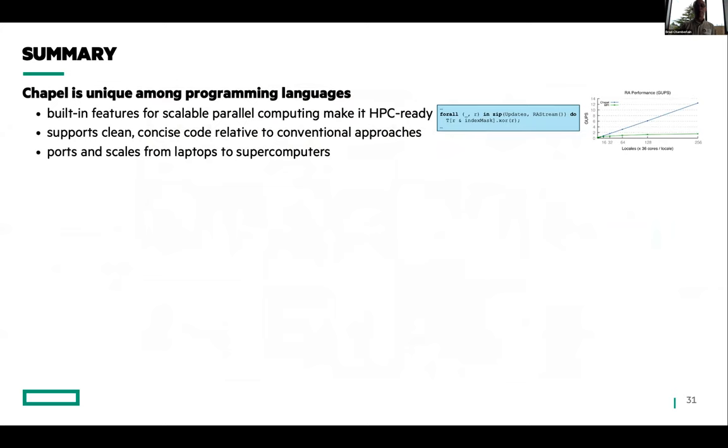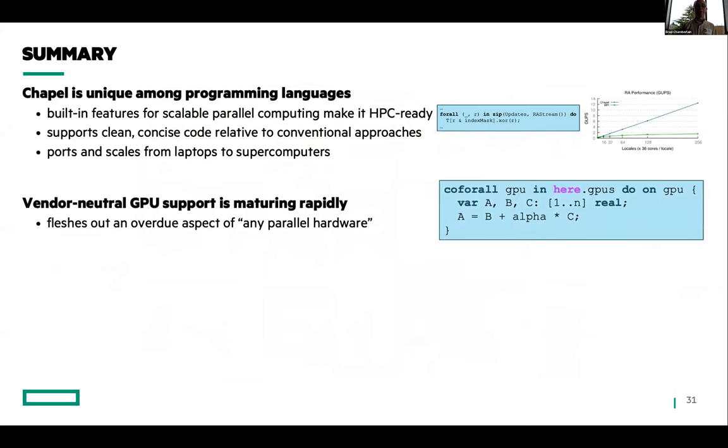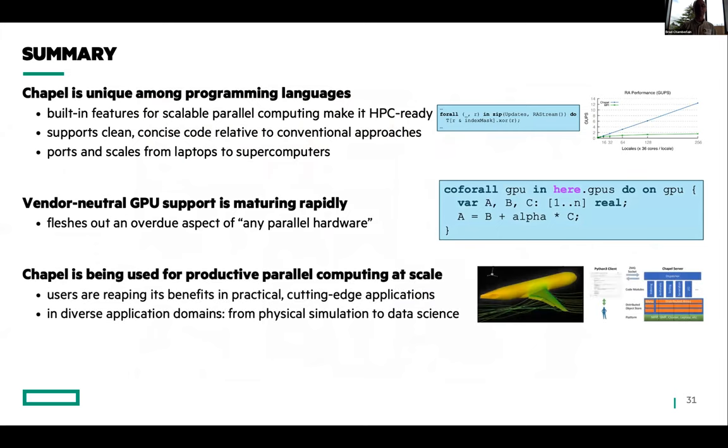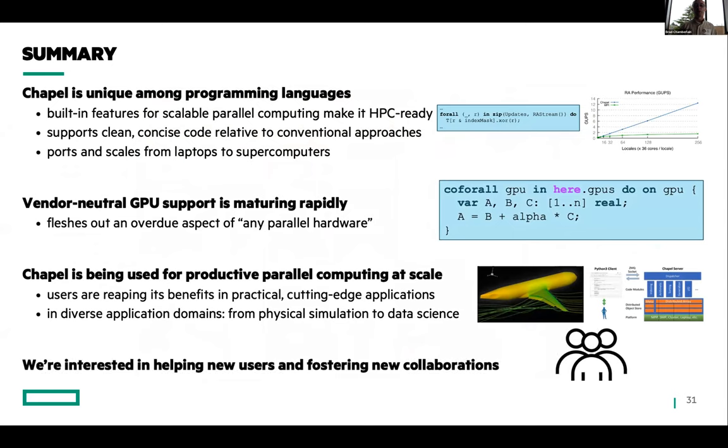And let me summarize. Chapel is unique among programming languages, I will assert. The vendor-neutral GPU support that we've been developing recently is maturing rapidly. Chapel is being used in the field for productive parallel computing at scale. And we're very interested in helping find new users and helping them out, and also fostering new collaborations. So if you're here and this looks at all interesting with respect to your research, please let us know. That's my talk. Thanks very much.